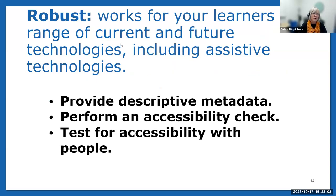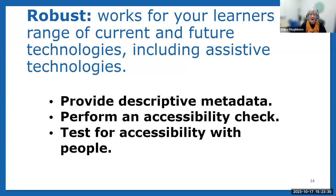Robust means the content works for our learners on a variety of technologies — regular educational instructional technology and assistive technology. Programs including PowerPoint and Word all have a built-in accessibility checker, and we'll be talking about that in future sessions. Also, if you have somebody you're creating something for, sit with them and go through it with them and just ask them: 'Is this accessible for you? What do I need to do to make sure that you can get the same information as your peers?' So POUR: perceivable, operable, understandable, and robust.